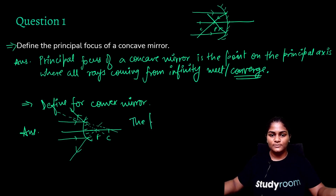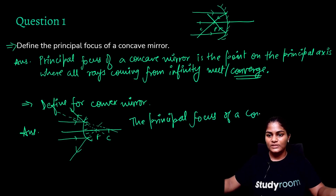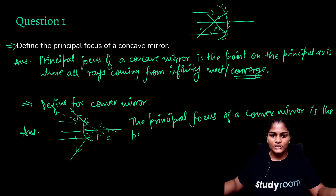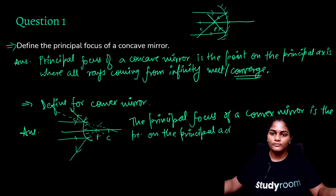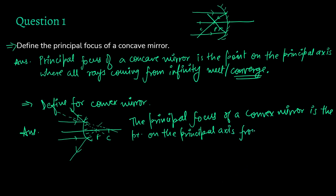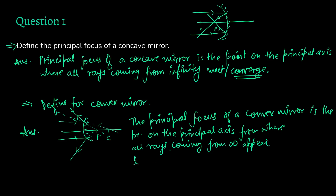From there we build our definition. The principal focus of a convex mirror is the point on the principal axis from where all rays coming from infinity appear to diverge — because they are not actually diverging from that point; we make a dotted line, so it's imaginary — appear to diverge. That's it for that question.